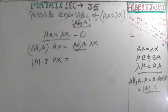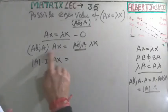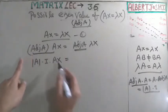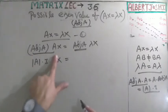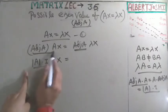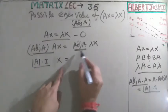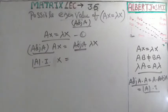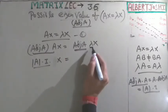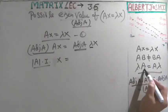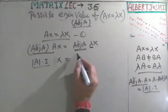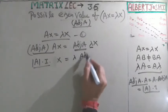We have taken adjoint of A into A on the left side, giving determinant of A times I. Now, adjoint of A times λ — since λ is a scalar, by the property that multiplying any scalar to a matrix allows you to rearrange, we can write λ times adjoint of A times x.